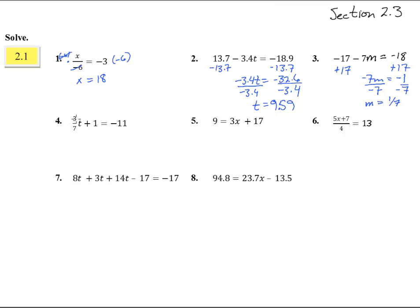Number 4. Here we have 3 sevenths t plus 1 equals negative 11. We need to get rid of the addition subtraction ones first. So we subtract 1, and we get 3 sevenths t equals negative 12. Get rid of the 3 sevenths by timesing by 7 thirds on both sides. That's the same thing as dividing by that 3 sevenths. And we end up with t equals negative 4 times 7 is a negative 28.